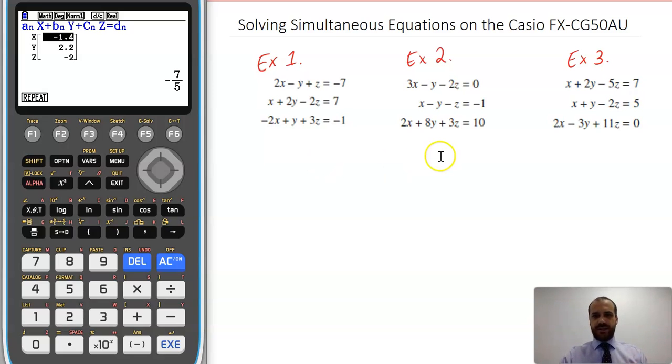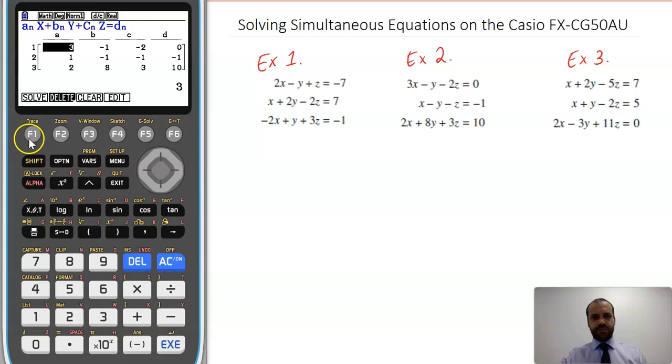All right, let's do this next example right here. So I'll just clear my values here. Yep, and we're back to the start. 3, negative 1, negative 2, 0, you get the idea. That's all entered in there. I can just press my solve button, and I'll get no solution.